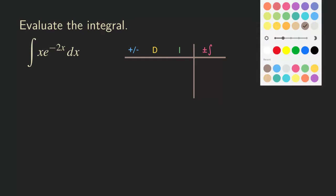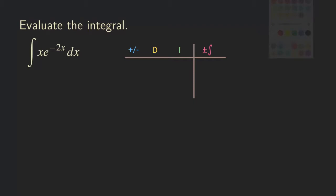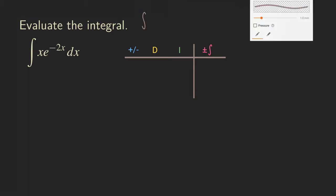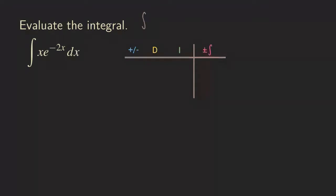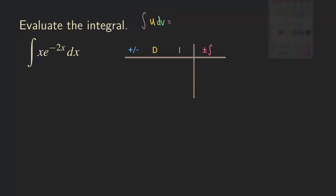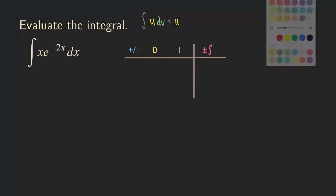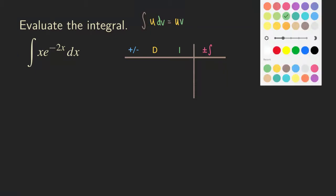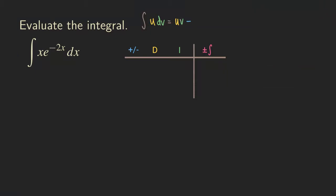So let me write down the integration by parts formula. The formula looks like the integral of u times dv, and that equals u times v, minus the integral of v du.